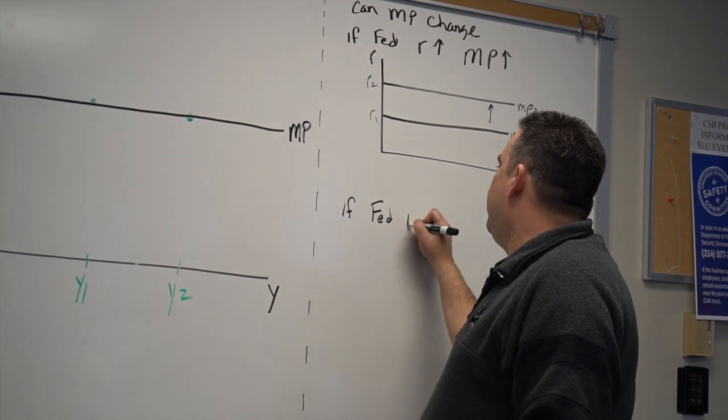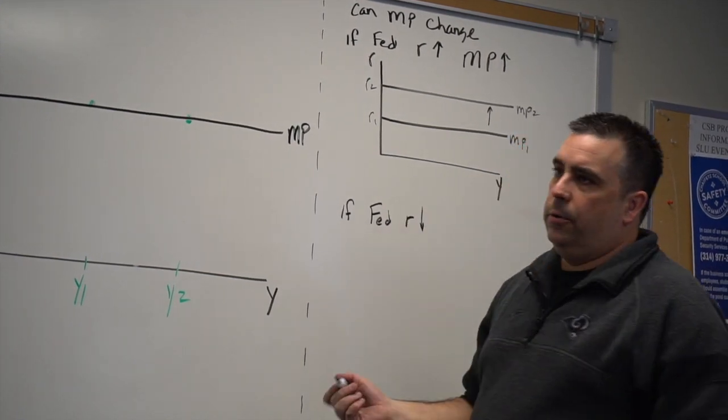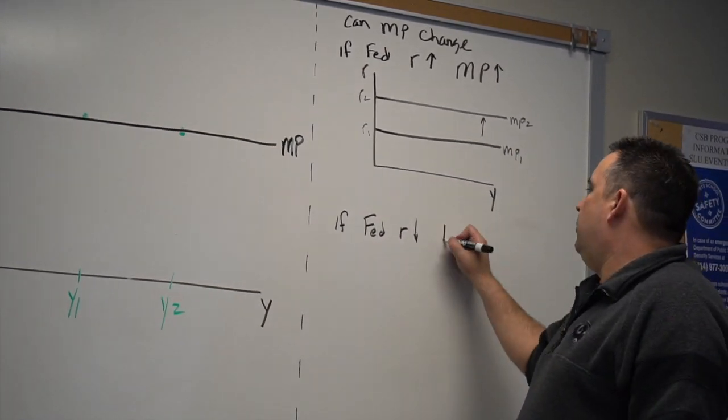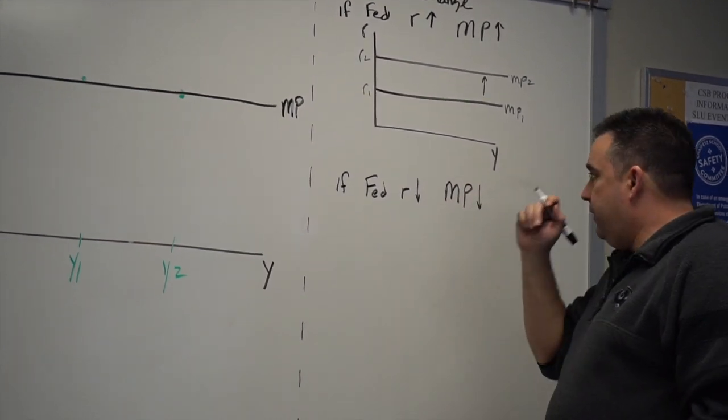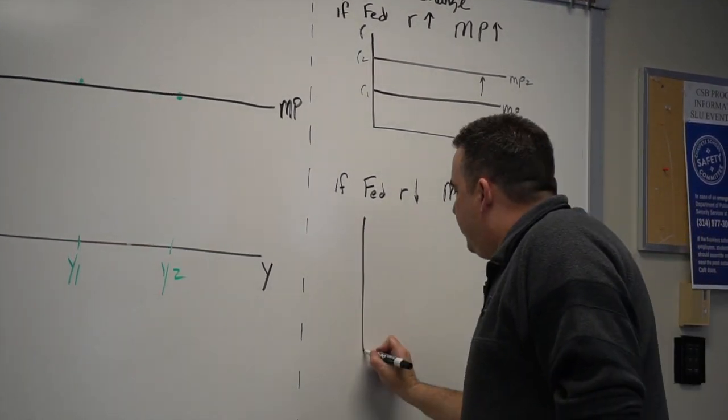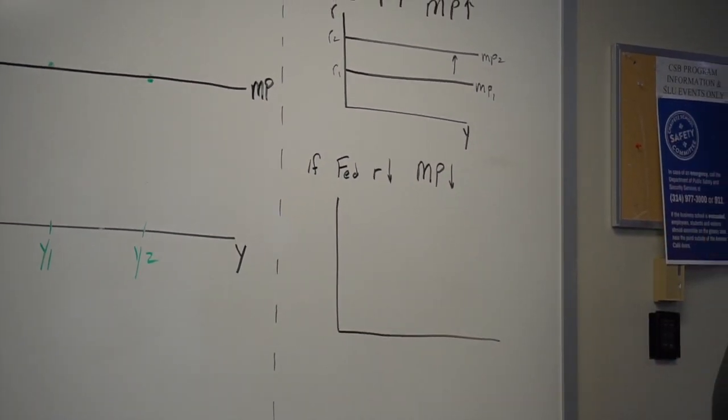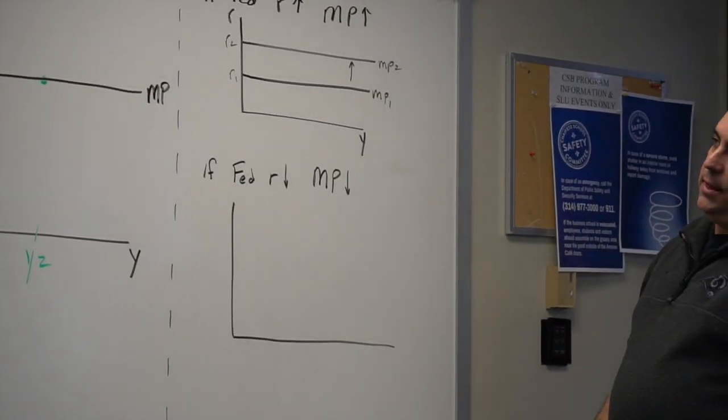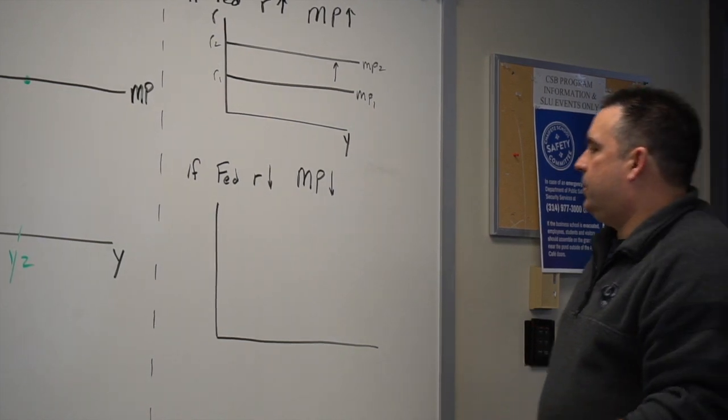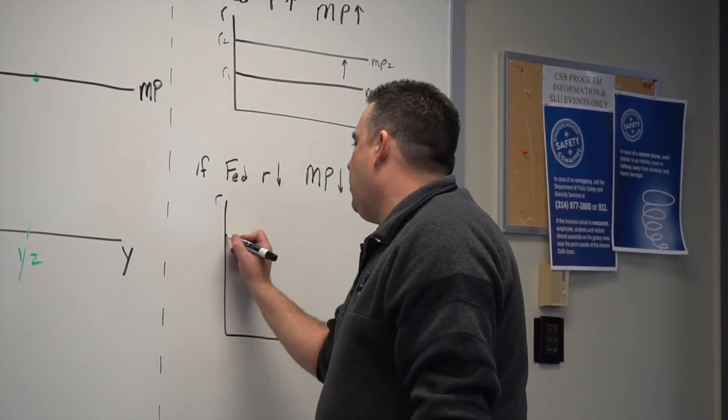Conversely, if the Fed lowers the interest rate, they want to lower their target interest rate, it would shift the MP function down. I actually think this is one of our easier curves, as long as we know what's happening with the interest rate in the money market, we can determine the MP function.